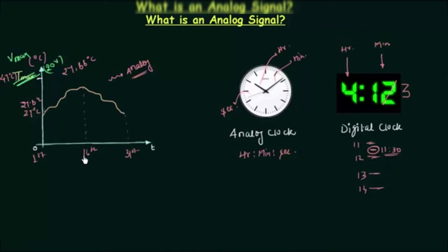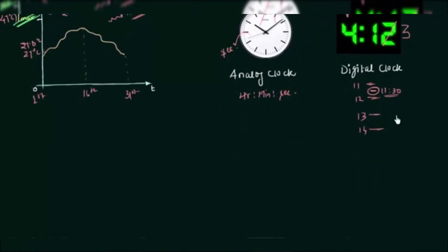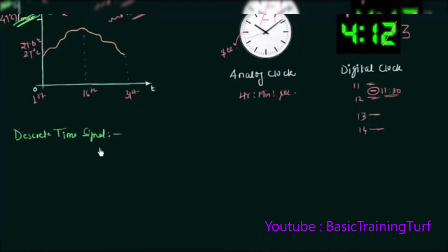Now we move to the next type of signal: the discrete time signal. It is important to understand this before we move to digital signals. The signal which is defined only for discrete intervals of time is called the discrete time signal.